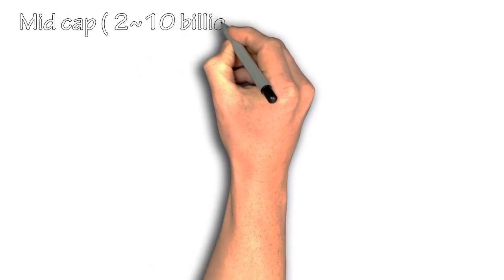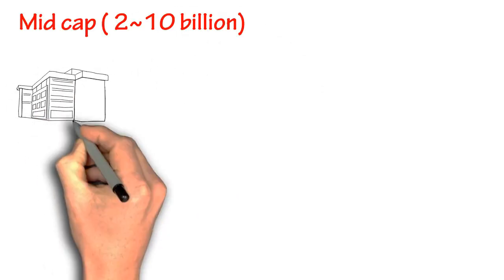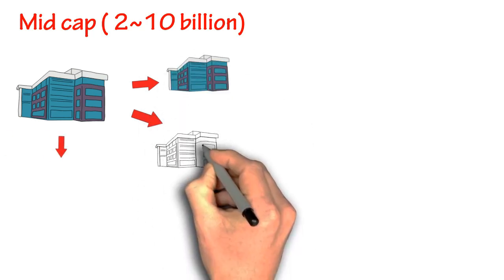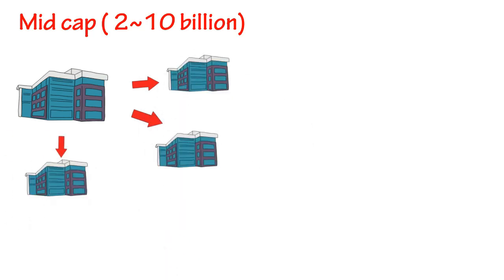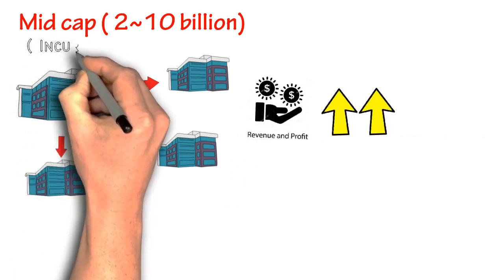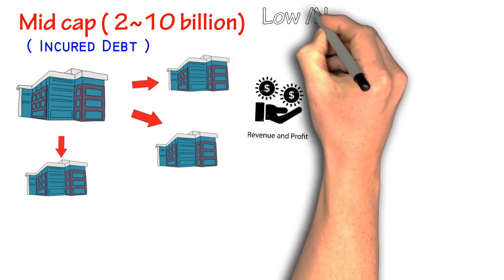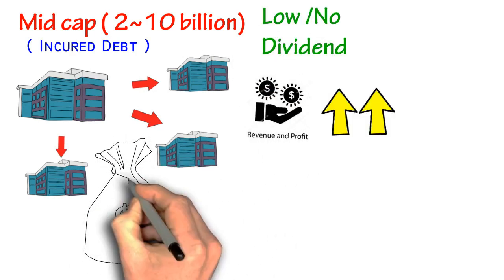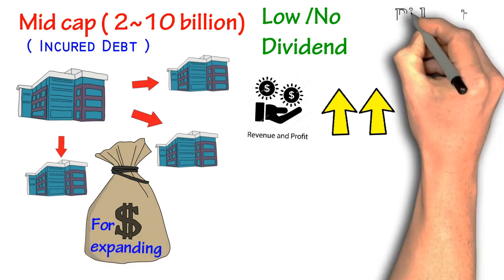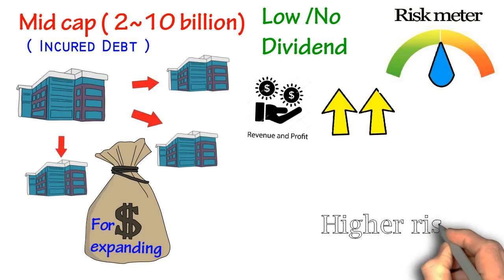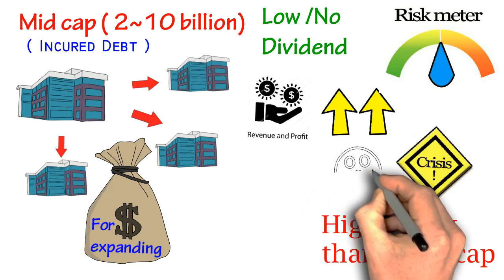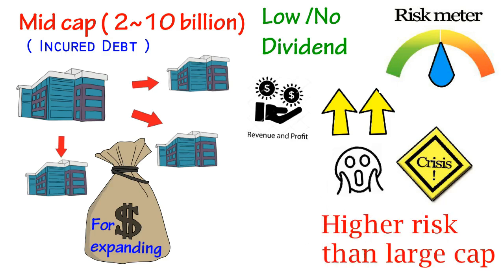Mid cap consists of companies expected to experience rapid growth. These companies are stable and in the process of expanding their business. The expansion will help the company generate more revenues and increase profit. This kind of company usually incurs debt and does not give much in dividends — all money and assets are utilized fully for growth and expansion. Hence, mid cap stock has higher risk than large cap stock, and if a mid cap stock encounters a world-class crisis, it could end up in bankruptcy.